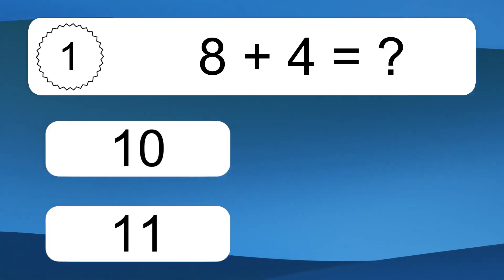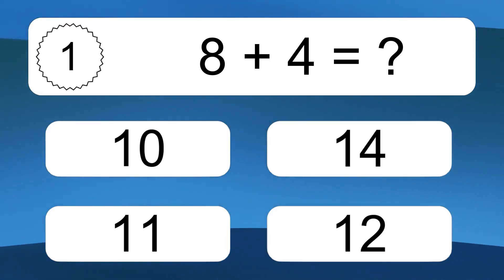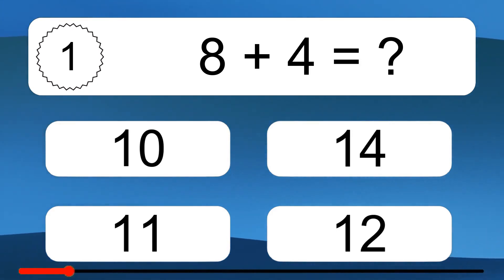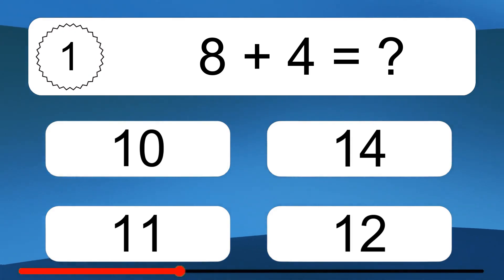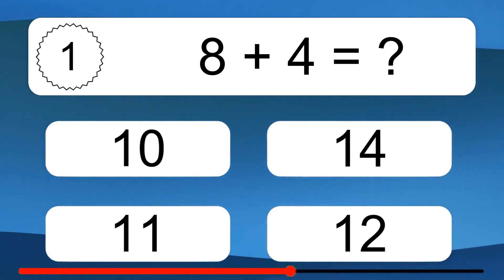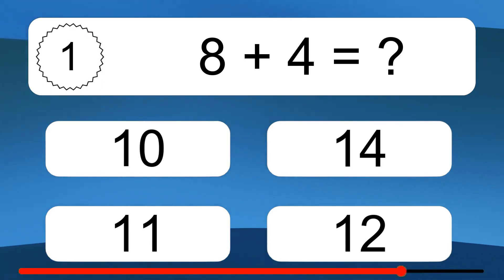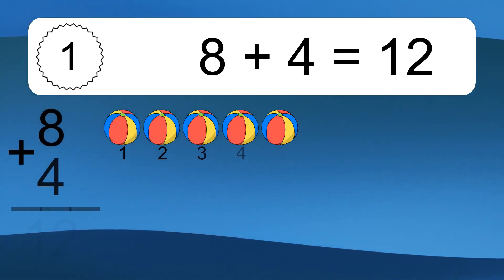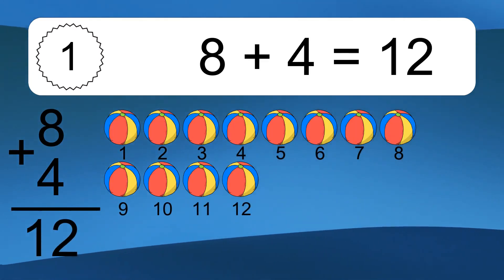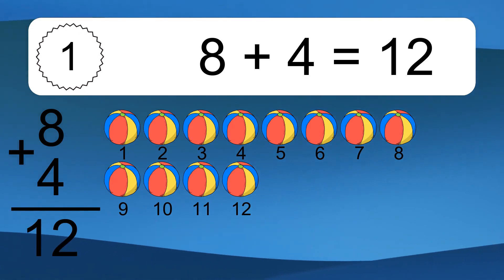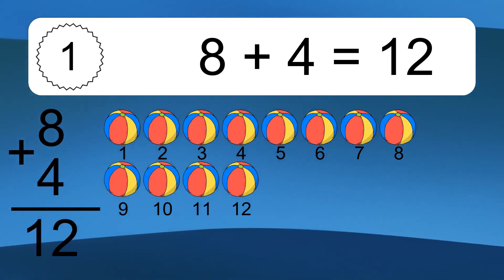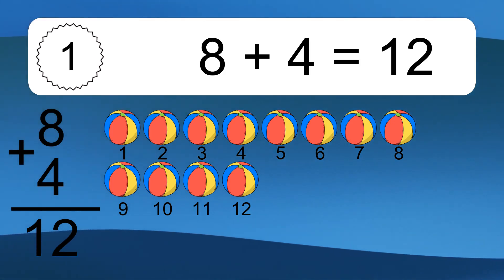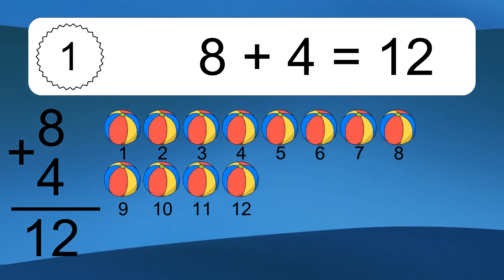8 plus 4 equals what? 8 plus 4 equals 12. Let's count it: 1, 2, 3, 4, 5, 6, 7, 8, 9, 10, 11, 12.